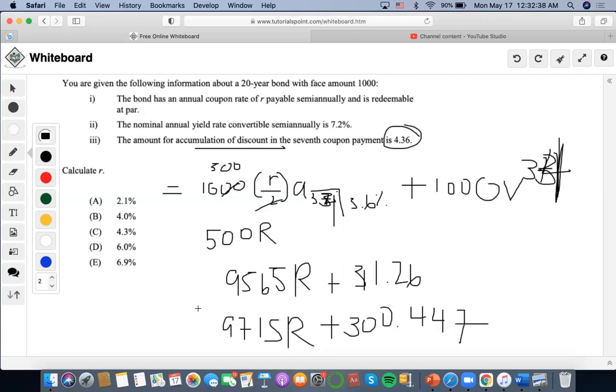Now I'm going to subtract both book values. I'm going to do 9565 minus 9715 and get negative 150R. Now I'm going to do 311.26 minus 300.447 and get plus 10.813. Right? Alright, this is the R term. Now I'm going to set this equal to the discount of 4.36. Then I'm going to get 4.36 minus 10.813 and then I'm going to divide it by negative 150. And I'm going to get 0.04302, which would mean that the answer would be 4.3%. Let's see. You're welcome. Thank you.